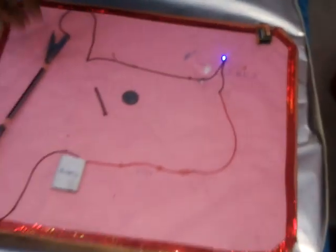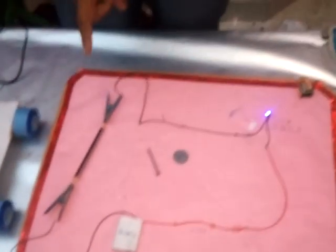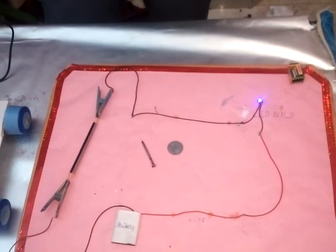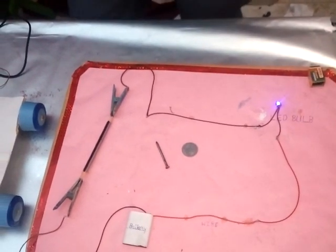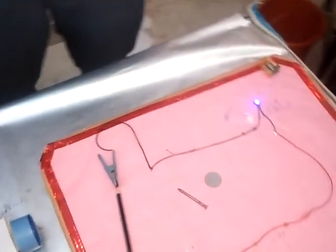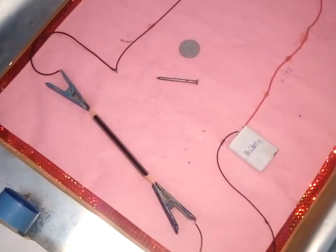Graphite is a non-metal, but it also conducts electricity. That it is an exception. Like mercury is a metal, but it is liquid in form. That's so that some non-metals also conduct electricity.